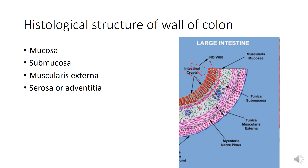The muscularis externa also consists of two layers, but there are some differences we will observe when we study this layer in detail. The last layer is the serosa or adventitia. Some parts of the colon are covered by peritoneum, so the last layer is the serosa; in other parts devoid of peritoneum, it is called adventitia.